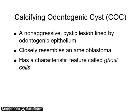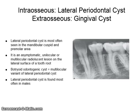It closely resembles an ameloblastoma and has a characteristic feature called ghost cells. The lateral periodontal cyst is named for its location and is most often seen in the mandibular cuspid and premolar area. It is an asymptomatic unilocular or multilocular radiolucent lesion on the lateral surface of a tooth root. It is called a botryoid odontogenic cyst if it is multilocular.